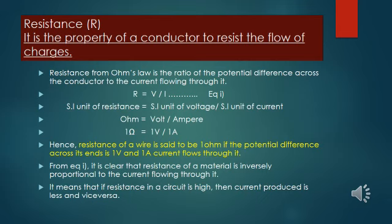A resistor offers an appreciable resistance or hindrance to the flow of charges. Resistance from Ohm's law is the ratio of potential difference across the conductor to the current flowing through it: R = V/I. The SI unit of resistance is Ohm, that is 1Ω = 1V/1A. Hence the resistance of a wire is said to be 1 Ohm if the potential difference across its ends is 1 volt and 1 Ampere current flows through it.